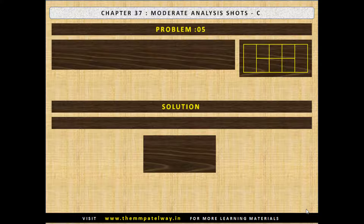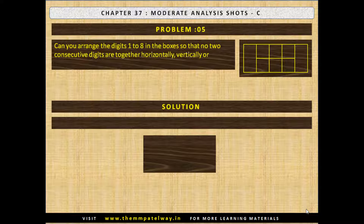Problem No. 5. Can you arrange the digits 1 to 8 in boxes so that no two consecutive digits are together horizontally, vertically or diagonally in either direction? Now stop the video and solve the puzzle.